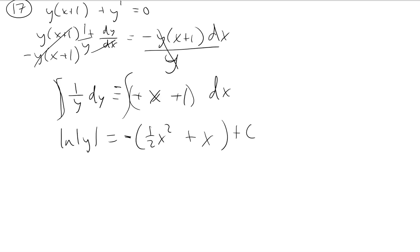All right, so now let's go ahead and try to solve for c. They did give us an initial condition of negative 2, 1. So plugging in 1 for y, negative 2 for x. We should be able to solve for c from this.